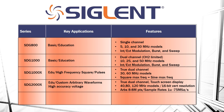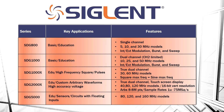And finally on the list is going to be the SDG 5000. Really, its claim to fame is going to be those floating outputs. So if you have a circuit that requires a floating input and you want to emulate a sensor, for example, that's floating or not tied to ground, the SDG 5000 is available in 80, 120, and 160 MHz models. Its claim here is that floating 42-volt dual channel outputs — so if you do have a floating application that requires floating inputs, the SDG 5000 would be my recommendation.